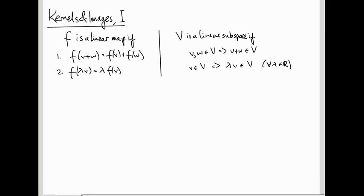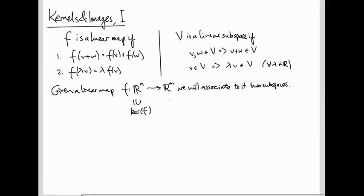These two definitions are very similar if you look at them. And what we're going to do is, given a linear map F from R^n to R^m, we will associate to it two subspaces. One is going to be a subspace of R^n, and that's called the kernel of F. And the other will be a subspace of R^m, that'll be the image of F.